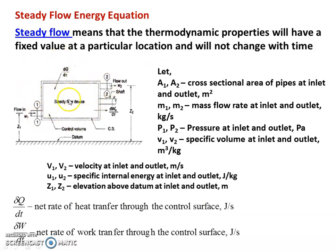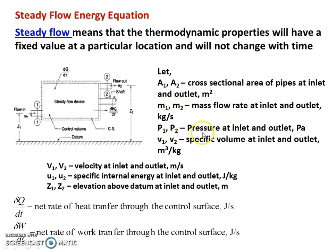Now, we have a steady flow device with an inlet and outlet. The inlet is at height Z1 from the reference point and the outlet is at height Z2. Inlet section is 1-1 and outlet section is 2-2. A1 and A2 are the cross-sectional areas of the pipe at inlet and outlet. M1 and M2 are the mass flow rates in kilograms per second. P1 and P2 are pressures in Pascal. V1 and V2 are specific volumes in metre cube per kilogram. V1 and V2 are velocities in metres per second. Small U1 and U2 are specific internal energies in joules per kilogram. Z1 and Z2 are elevations above the datum in metres.